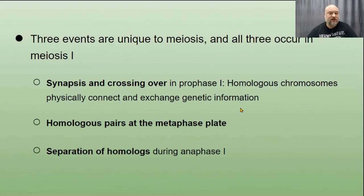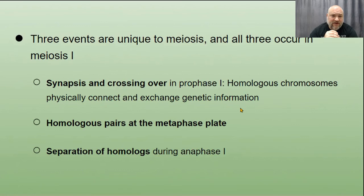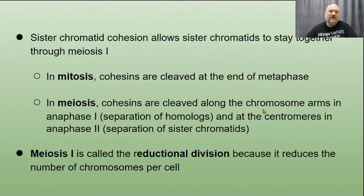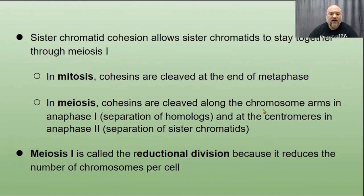Three events are unique to meiosis, and all three occur in meiosis I. First, synapsis and crossing over in prophase I — homologous chromosomes physically connect and exchange genetic information, which is very important for genetic diversity. Second, homologous pairs line up at the metaphase plate, as opposed to just individual chromosomes in mitosis. Third, in anaphase I we separate those homologs — in mitosis we separate sister chromatids. Sister chromatid cohesion allows sister chromatids to stay together through meiosis I; cohesins are cleaved along chromosome arms in anaphase I (separating homologs) and at the centromere in anaphase II (separating sister chromatids). This is why meiosis I is called a reductional division — reducing chromosome number from 46 to 23 in humans.